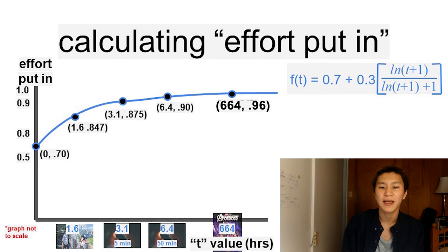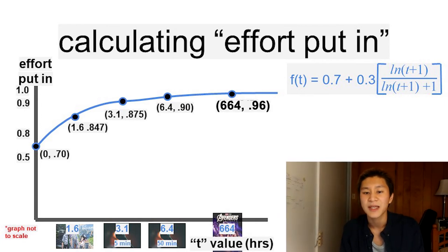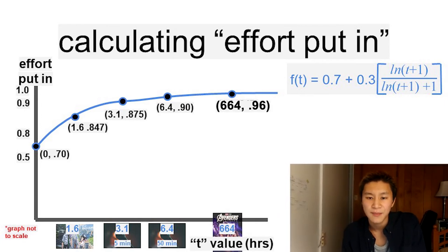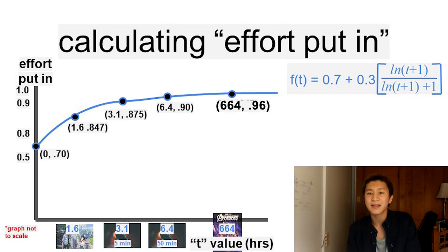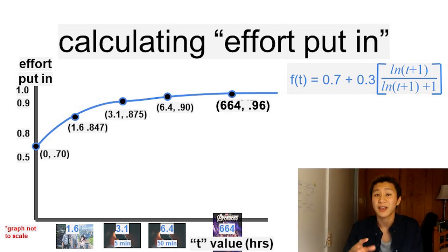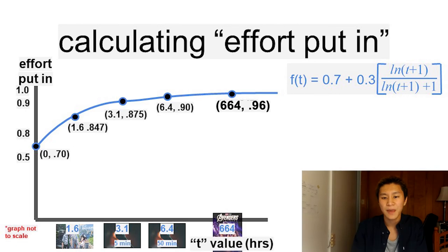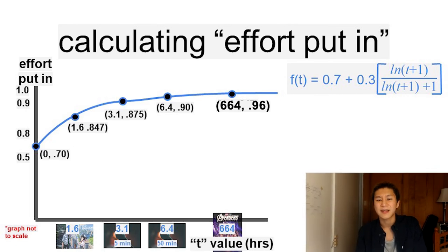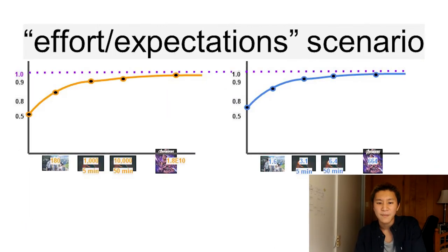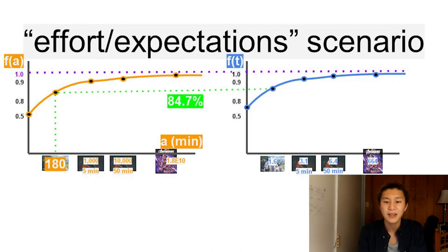And lastly, Avengers Endgame. Effort 96%. Prep time, 664 hours. Okay, so the graph obviously is a little off when we look at extreme cases such as Endgame, which definitely took like thousands and thousands of hours to make. However, we get a general idea of the relationships between the attention consumed, the effort expected, the effort put in, and the time put in to prepare.